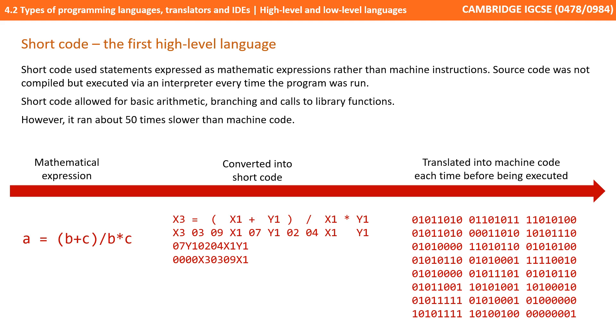Short code allowed for basic arithmetic, branching, and also course library functions. However, it did run about 50 times slower than machine code.